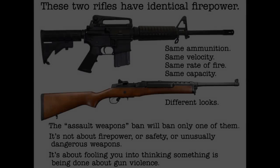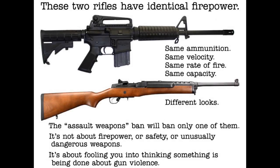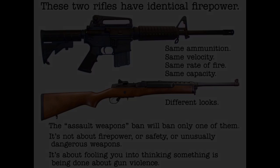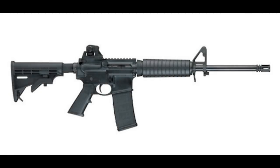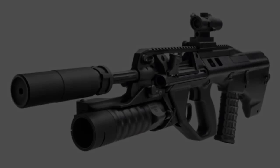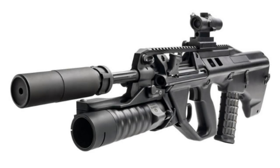It must be stressed that the term 'assault weapon' is a purely political term and has no meaning in the military sense. Assault weapon is often confused with assault rifle. An assault rifle is a rifle that uses a detachable magazine, fires an intermediate cartridge, and usually has a selective fire capability for full auto and/or burst fire modes in addition to semi-automatic fire.